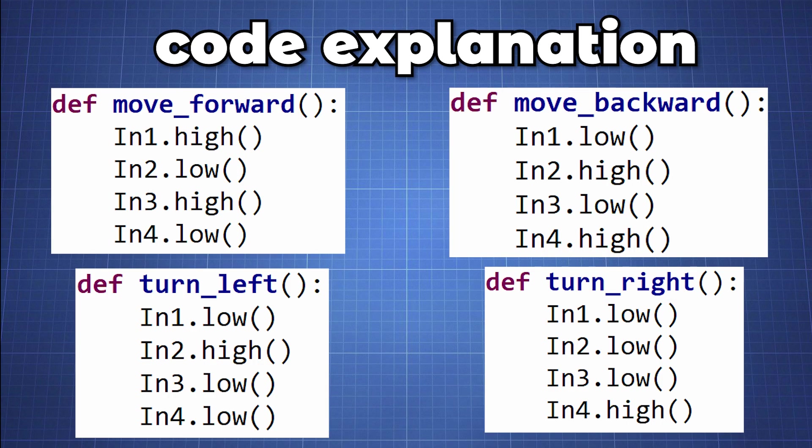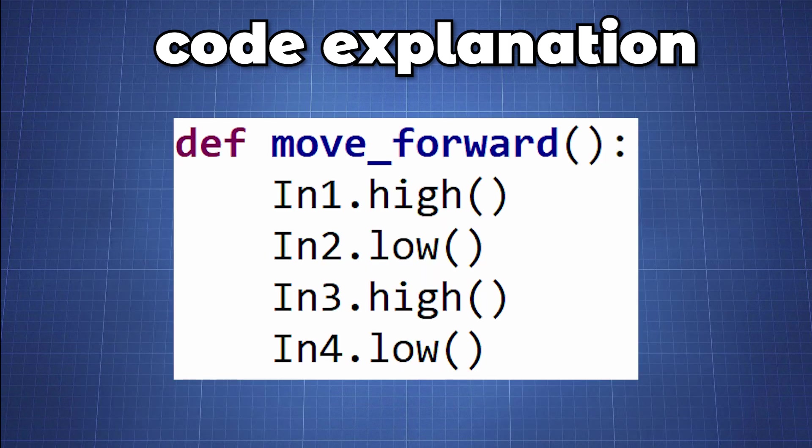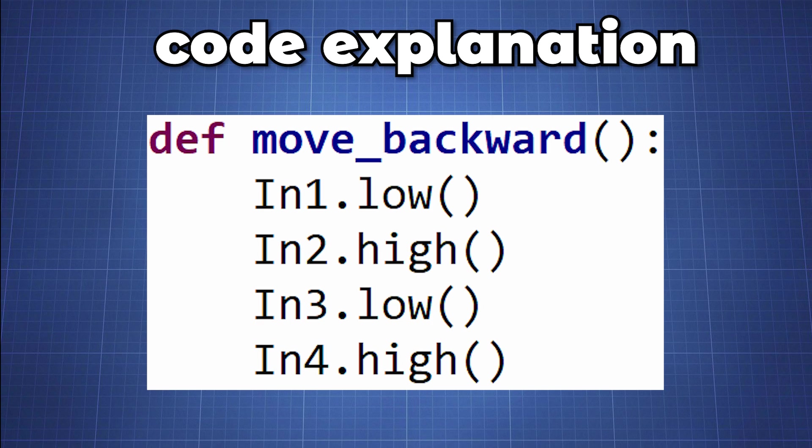We then create four functions for the movement of the motors to either turn clockwise or anti-clockwise. We define a function move_forward and set the pins to low or high as indicated. If you find that one motor turns in the opposite direction due to the connections you can change the pins low and high or swap the wires connected to the motor. We define a function move_backward and set the pins as indicated which is the opposite than the move_forward function.